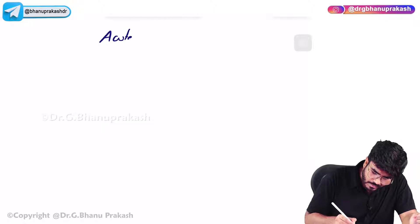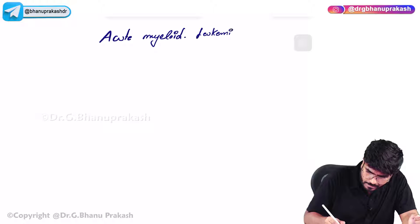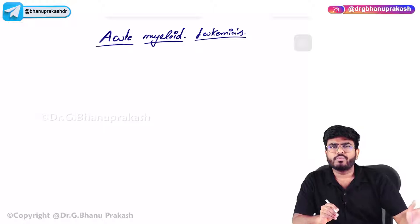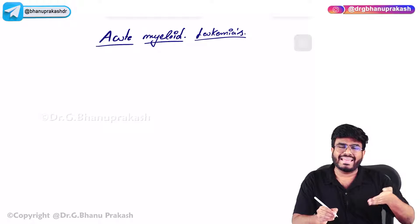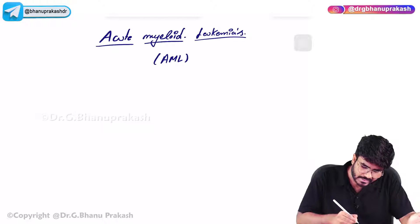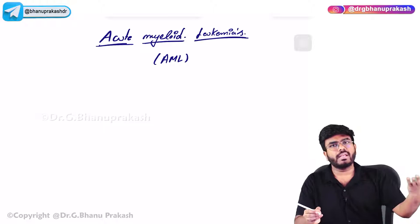Welcome back. In this video, let's continue with acute myeloid leukemias. We have already discussed about acute lymphoblastic leukemias - ALL is completed. Now we are going to discuss about AML, that is acute myeloblastic leukemias and acute myeloid leukemias.